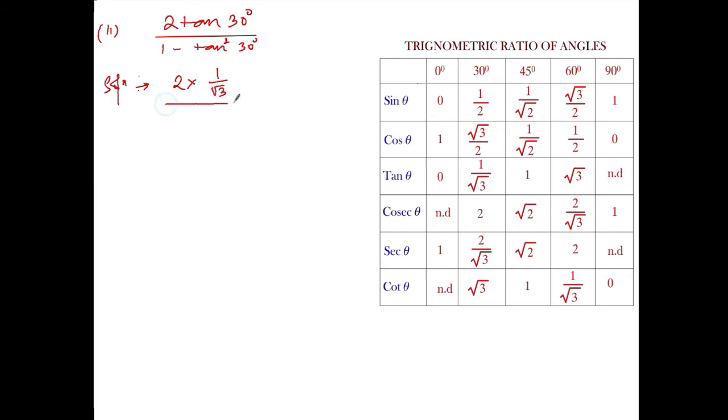And here it is divided by 1 minus tan² 30°. So first you find out tan 30°. Tan of 30° is 1 by root 3. But there is tan square, so you put square here.